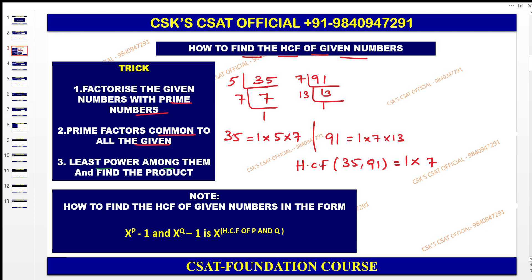Then now third step, listen very carefully: you need to take the least power among them, which means here all the powers are 1. Suppose, let us see here, suppose 7 power is 1 here, 7 power is 2, then what you need to do in this case is you need to take one only. Why? The least power. So here 1 and 2, therefore least is 1.